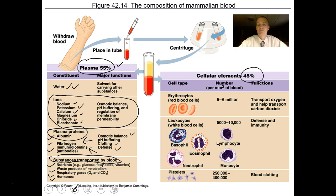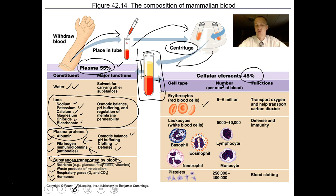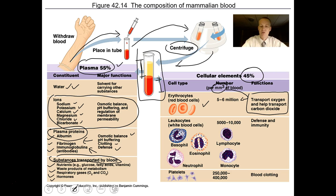If we take a blood sample, put it in a test tube and centrifuge it, the plasma — the lightest part — will be at the top at 55%. The cellular part will be at the bottom. The cellular part of blood is mainly made of erythrocytes, or red blood cells. In a cubic millimeter, which is a very small quantity, you have about five to six million red blood cells.